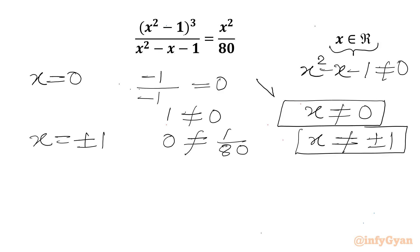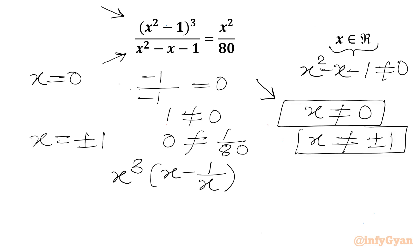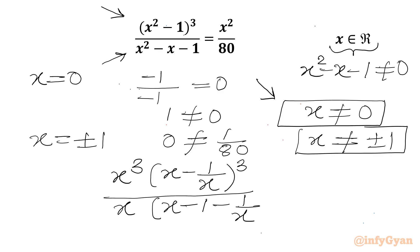Since x cannot be 0, I will take x common from the numerator and x common from the denominator. Once I take x common from the numerator it will come out as x cubed, giving in the bracket x minus 1 over x, to the power 3. And x common from the denominator gives x minus 1 minus 1 over x, equal to x squared over 8.